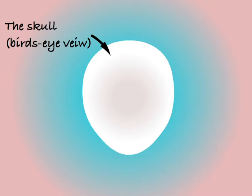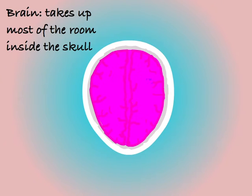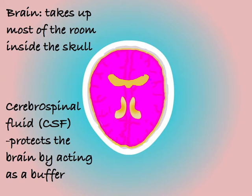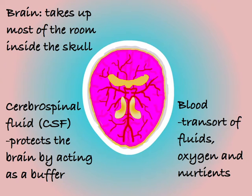We'll start by looking at the skull — in this case we're looking at it from directly above. If we were to take the top off the skull we would of course find the brain contained within it, and the brain takes up the vast majority of the room inside the skull. However, also contained within the skull we would find cerebrospinal fluid, or CSF. CSF is a fluid that bathes the brain and acts as a buffer to protect it; without it our brains would crash into the insides of our skull every time we moved our head. The final component is the blood that flows through the brain delivering oxygen and other essentials. That gives us our three components: the brain itself, CSF, and blood.